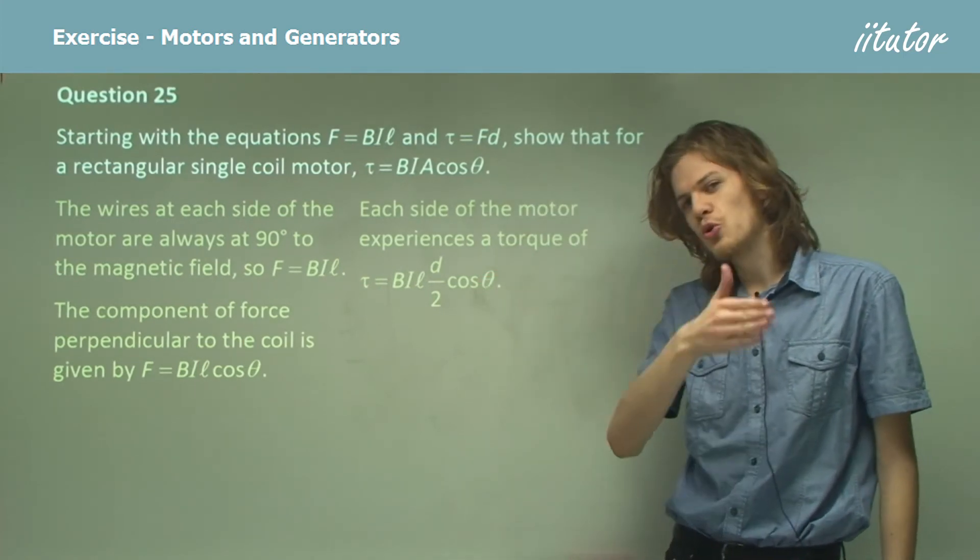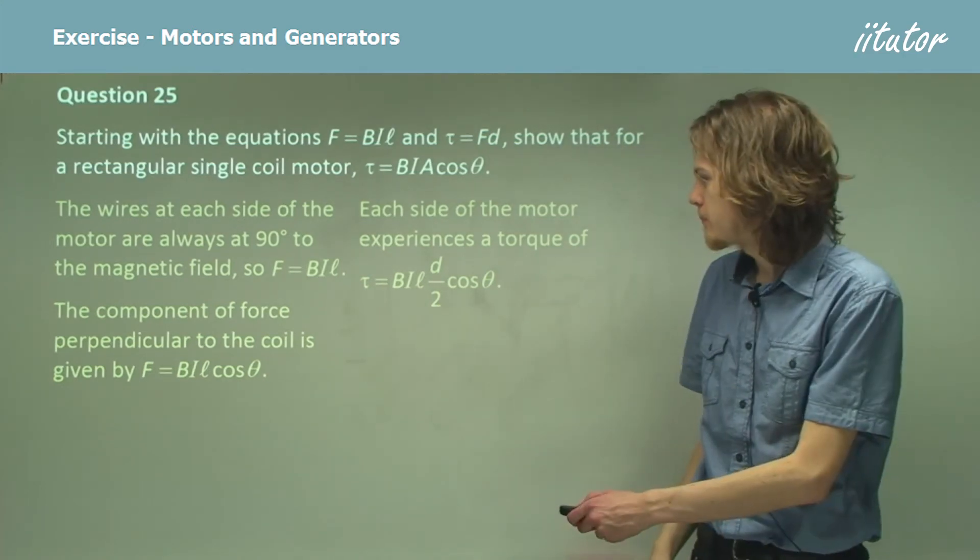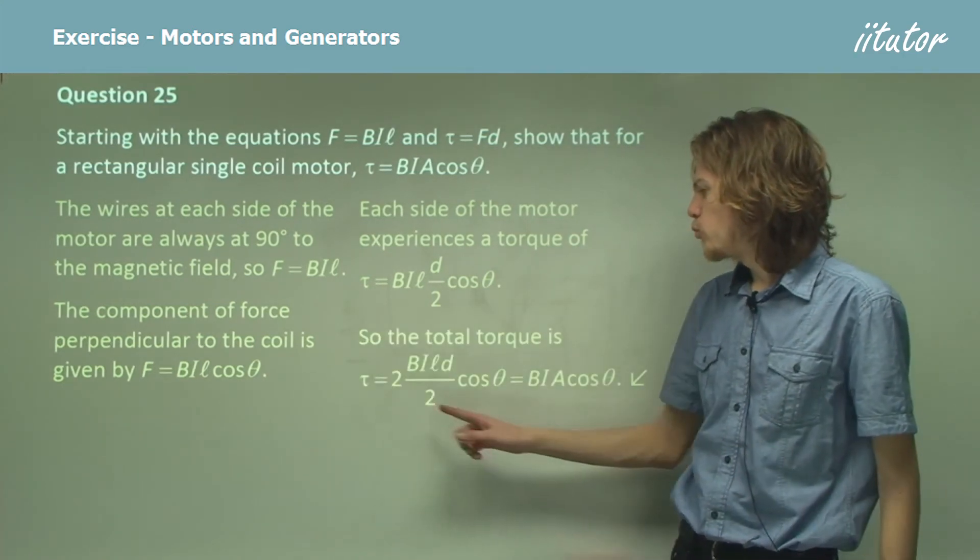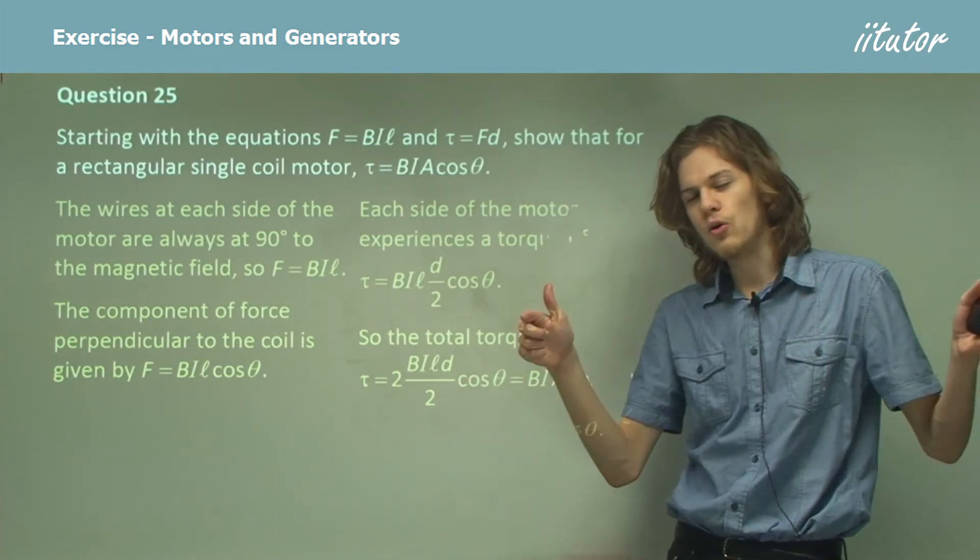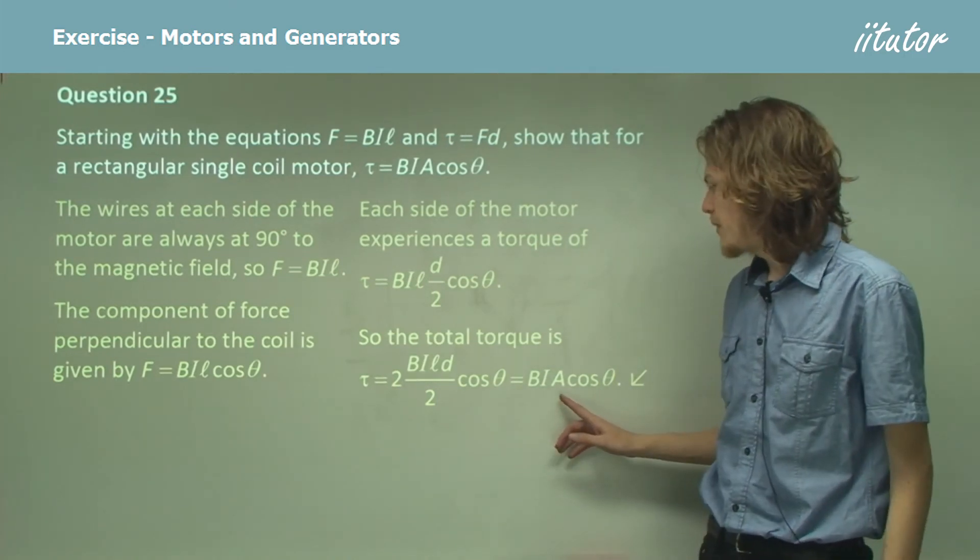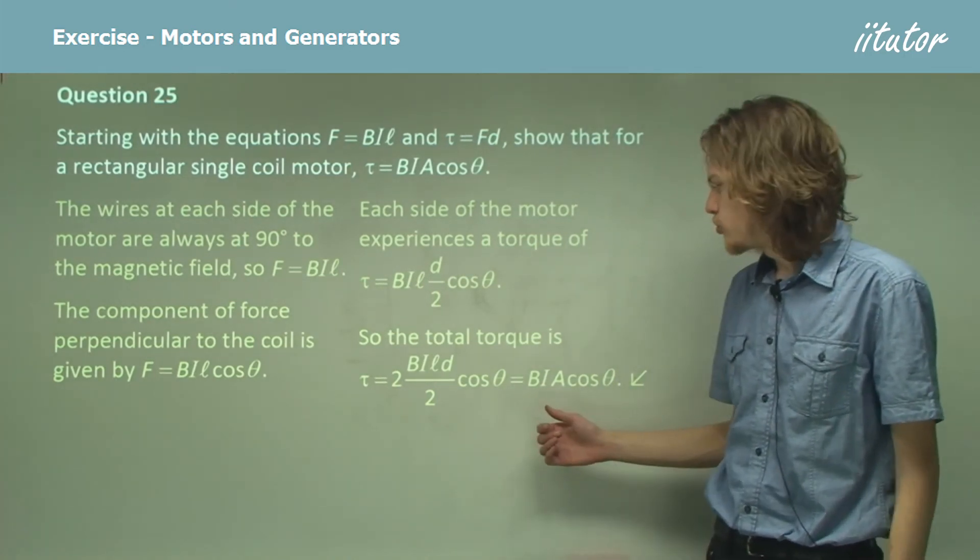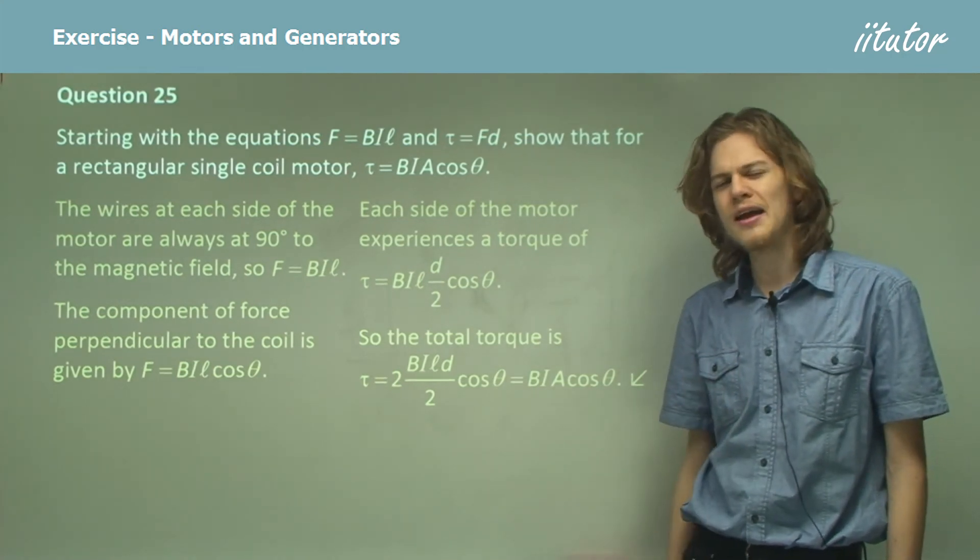But we actually have two coils that are experiencing this torque, so we can add that torque together. The total torque will be two times this amount, and we know that LD is the length of the coil times the distance of the coil, and that will be the area. So there we have our equation, torque equals BIA cosine theta.